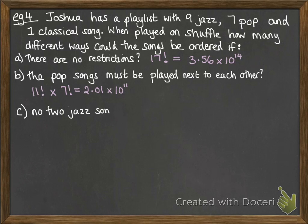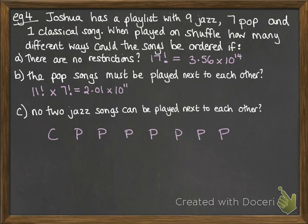And the last one, what if no two jazz songs could be played next to each other? So Joshua likes his jazz. He's got nine jazz songs, but he doesn't want to hear two in a row. So how many ways could we do that?